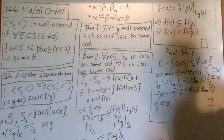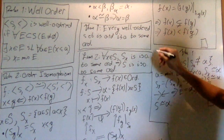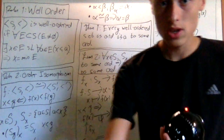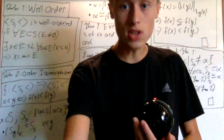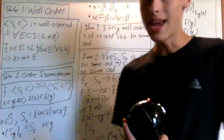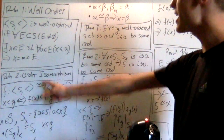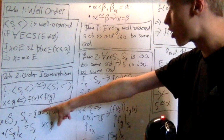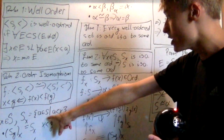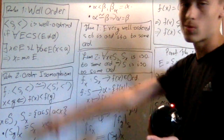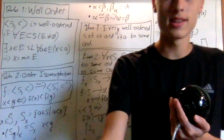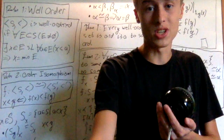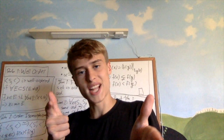And that's a wrap. Ordinals are our way of studying well-ordered sets, and segments are our way of studying order isomorphisms. Just keep that in mind for the future.